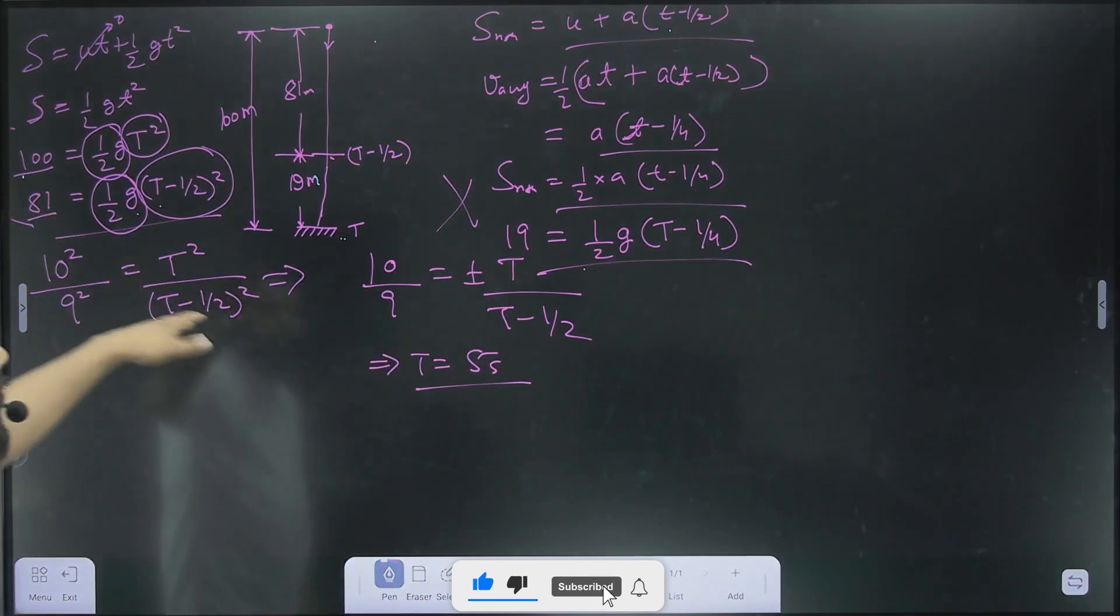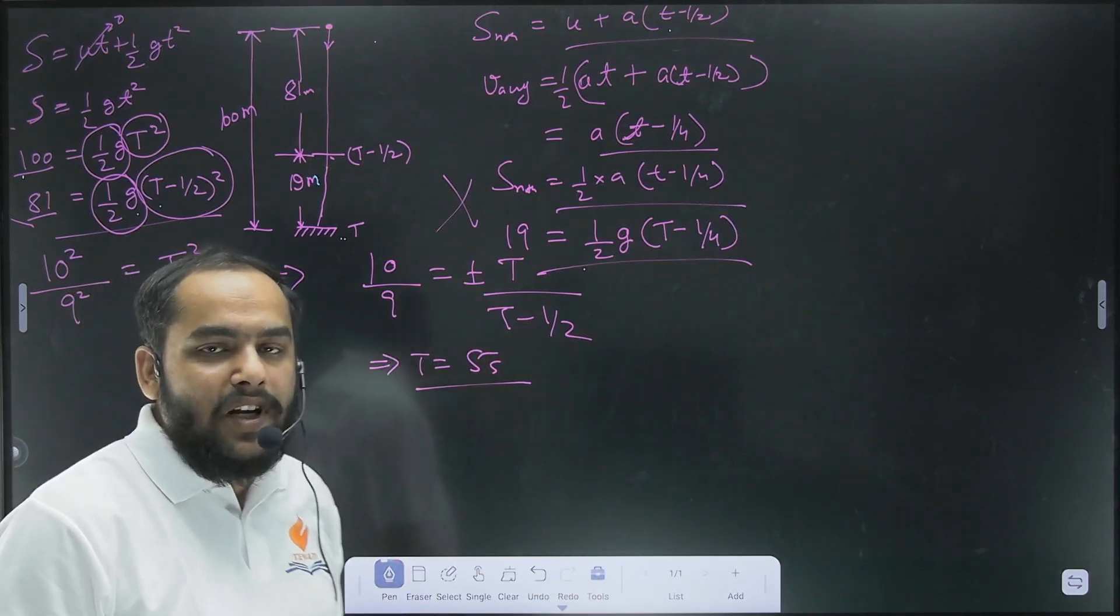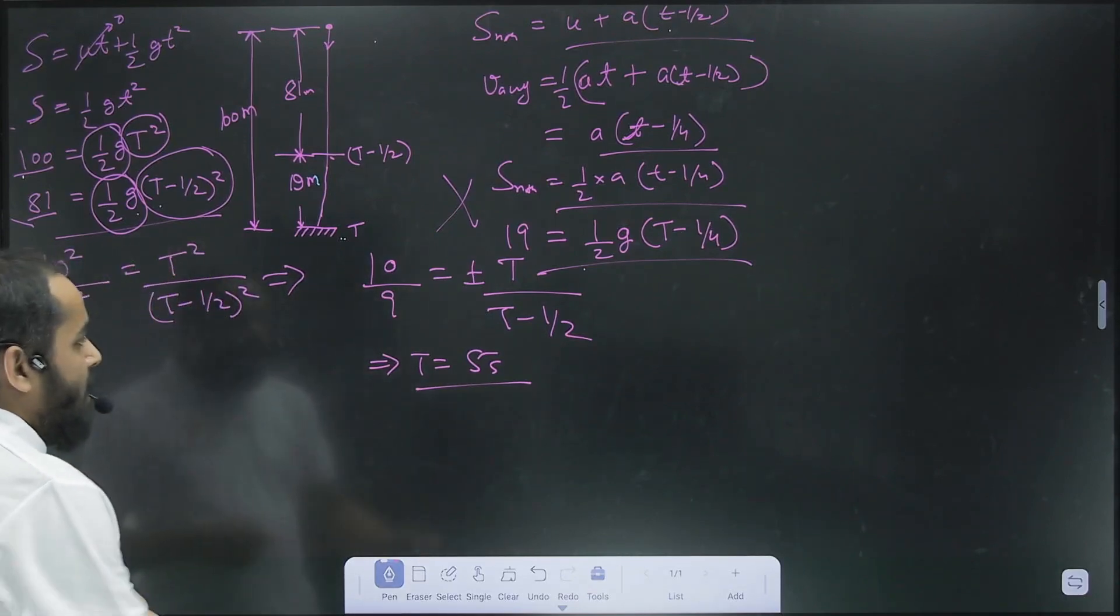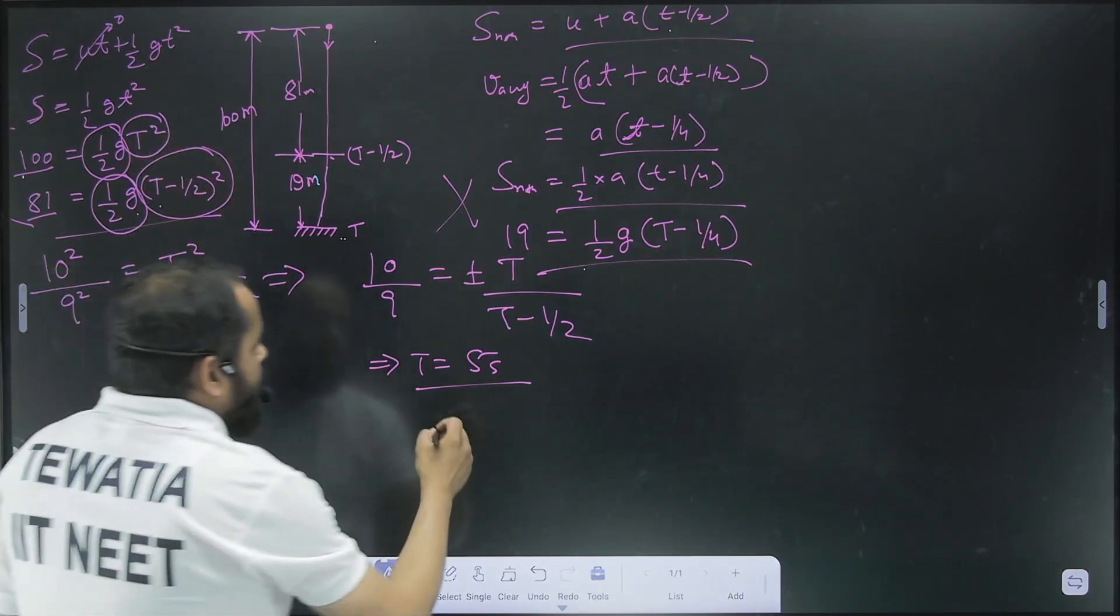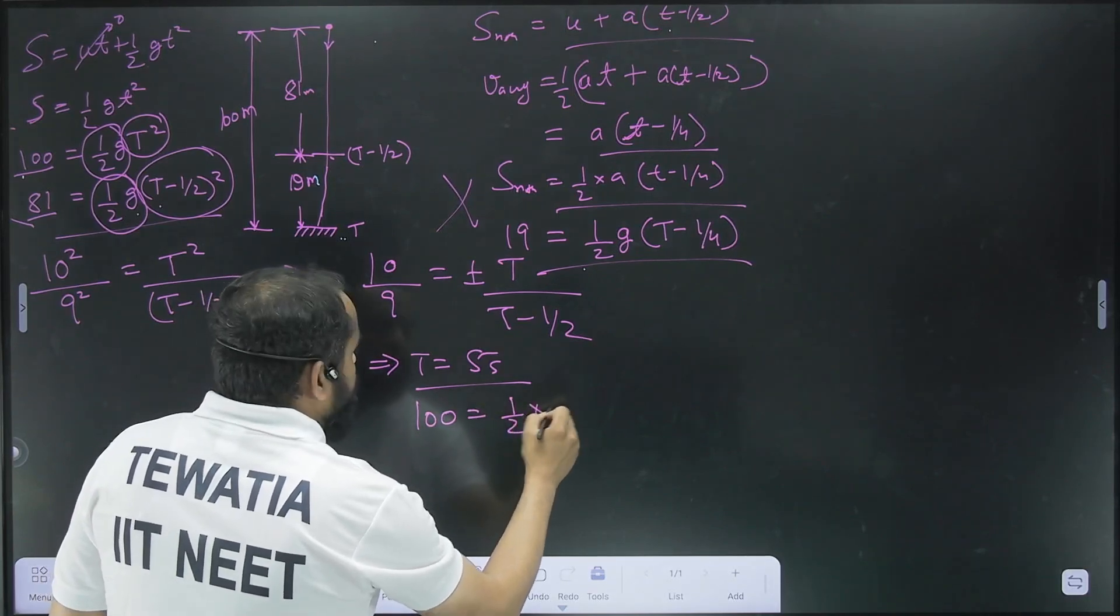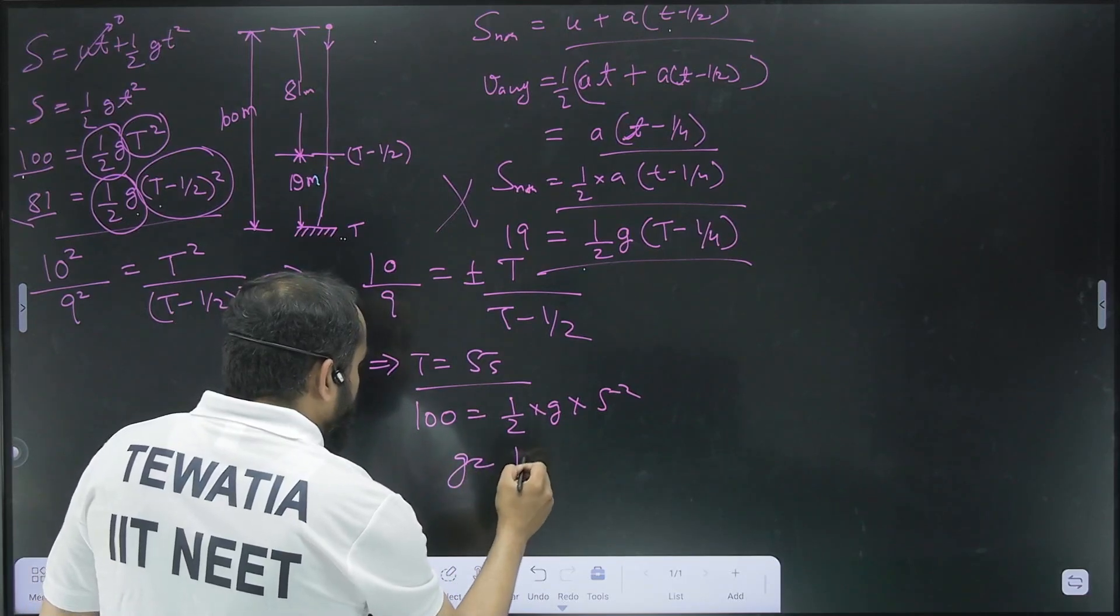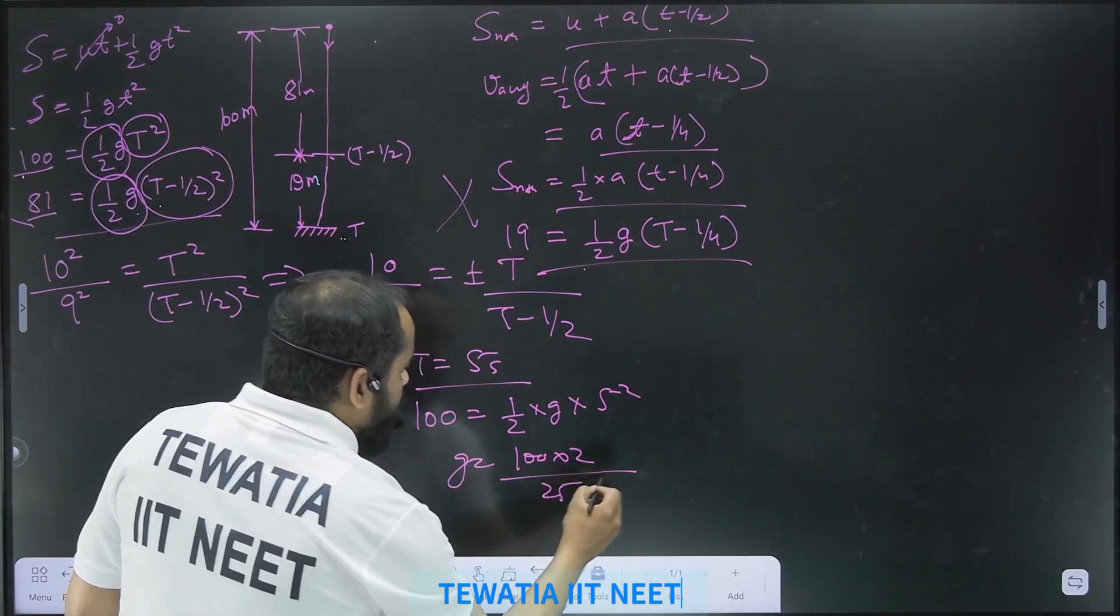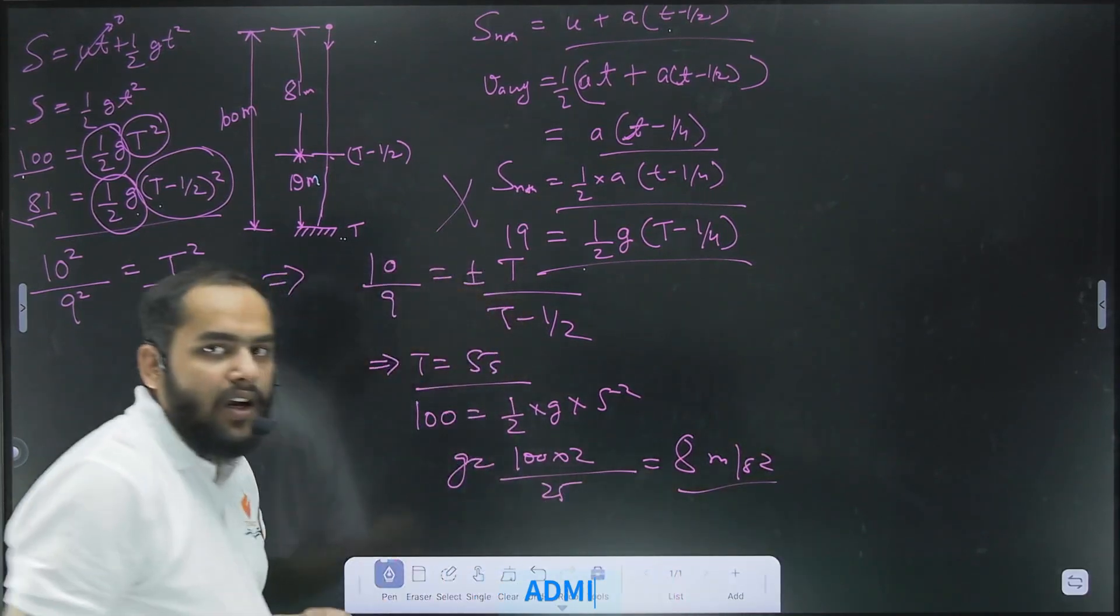You can see how much easier this method is compared to solving a quadratic equation using b squared minus 4ac plus minus b upon 2a. So now that we have time, we can just simply substitute time in this equation to get the acceleration due to gravity. That is going to be 100 equal to 1 by 2 into g into 5 square. g equal to 100 into 2 over 25 which is going to be 8 meter per second square which is going to be our answer.